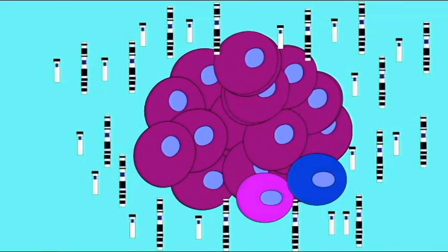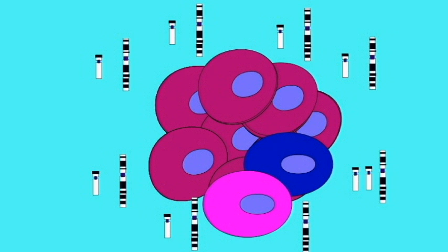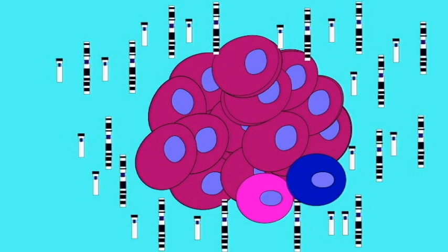The effect on the phenotype of the individual would vary throughout the body. The individual would be a mosaic of normal and abnormal cells.